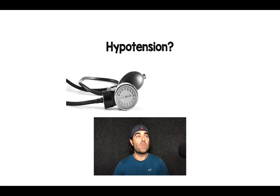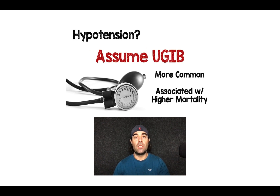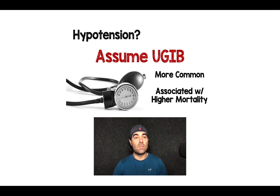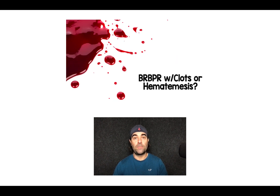If a patient presents and they're hemodynamically unstable — they have hypotension — just assume this patient has an upper GI bleed. It's the more common type of bleed. Upper is always going to be more common than lower, but it's also associated with a higher mortality. So just assume that it's upper and treat as such.